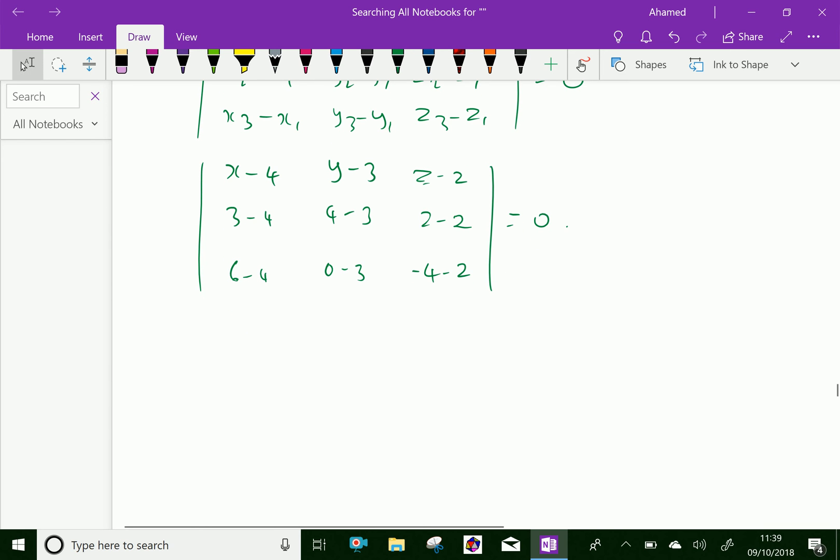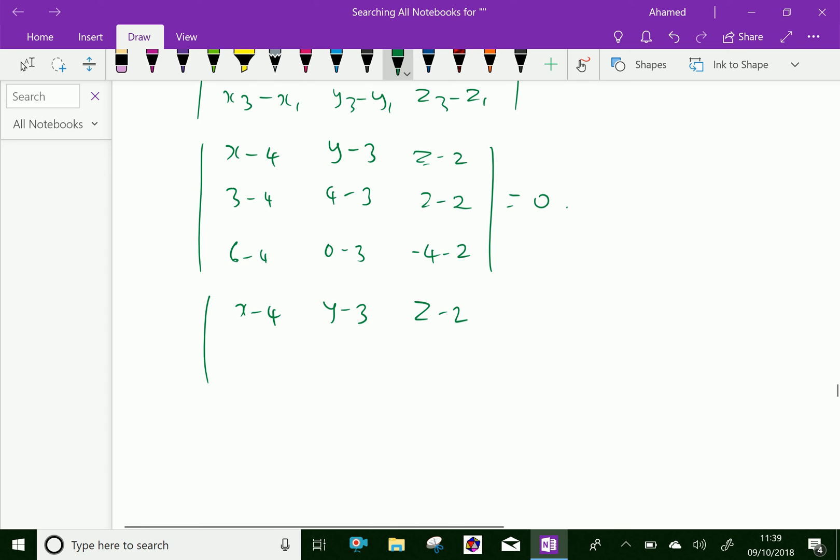We will expand this determinant value. Before that, we will simplify the values: x minus 4, y minus 3, z minus 2, as well 3 minus 4 is minus 1, and 4 minus 3 is 1, 2 minus 2 is 0, as well 6 minus 4 is 2, 0 minus 3 is minus 3, as well minus 4 minus 2 is minus 6, equal 0.